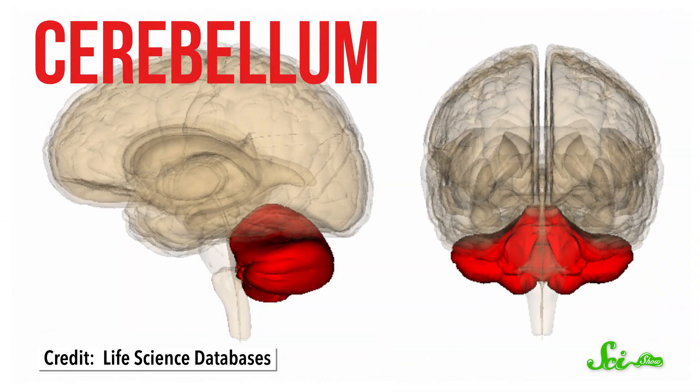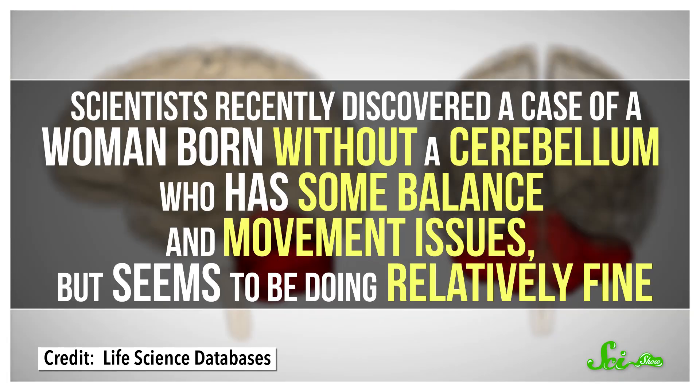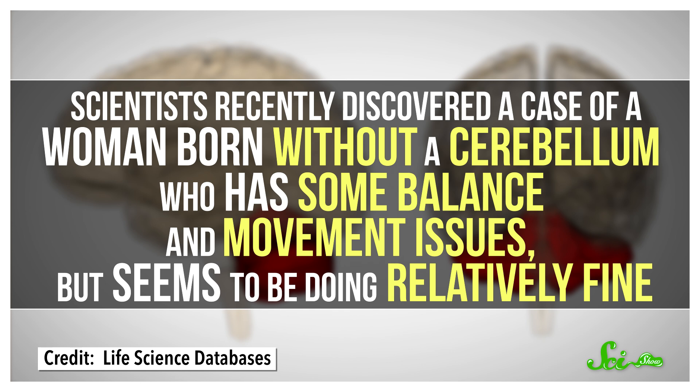The cerebellum is responsible for coordinating things like balance, posture, and voluntary movement. Weirdly though, scientists recently discovered a case of a woman born without a cerebellum, who has some balance and movement issues, but seems to be doing relatively fine. So there is still a lot to understand about how our brains process proprioceptive information.